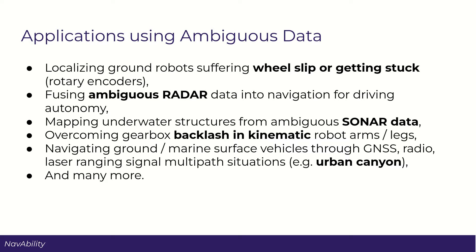If you're mapping underwater structures from sonar data where there's a lot of ambiguity, that's really applicable. Kinematic robotics where you've got a lot of backlash or uncertainty in the positioning of kinematic joints like through arms or legs, maybe the robot's statically mounted, that's also very applicable. And then any multi-path situations — if you have a GPS constellation where you're listening to radio ranging signals and they're getting reflected off buildings or occluded, otherwise known as urban canyon, that's also very applicable.